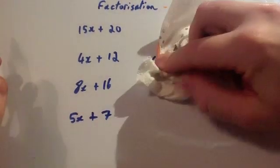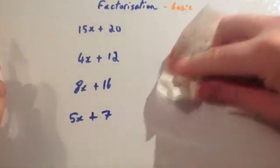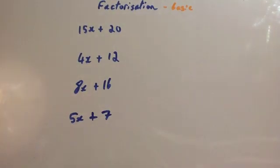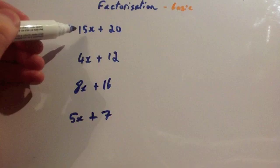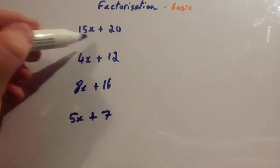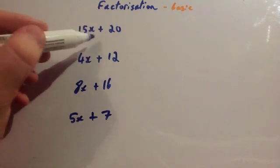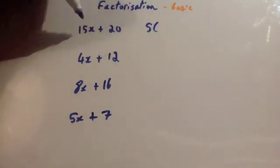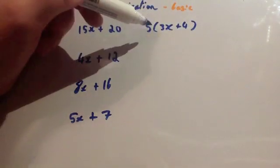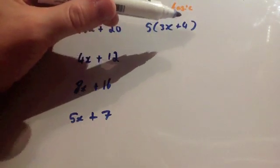Think of the word factorization — a factor is something that divides into something. So you're looking at what common factors an expression has. For example, 15x + 20: both are divisible by 5, so 5 is the common factor. You do 5(15x ÷ 5 + 20 ÷ 5), which gives 5(3x + 4).